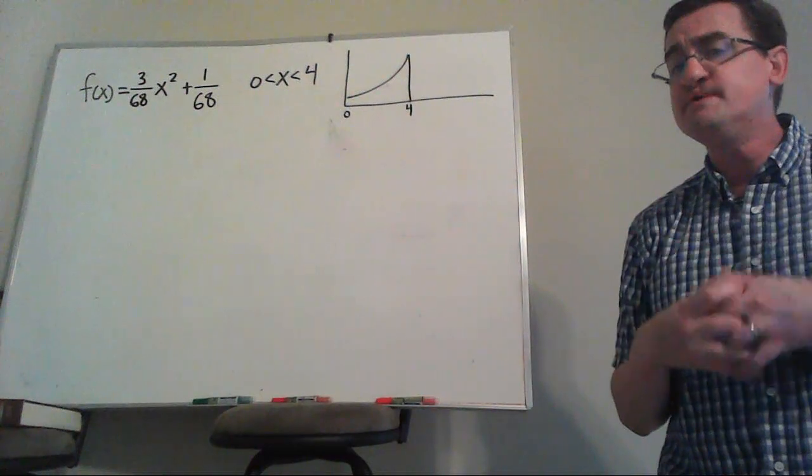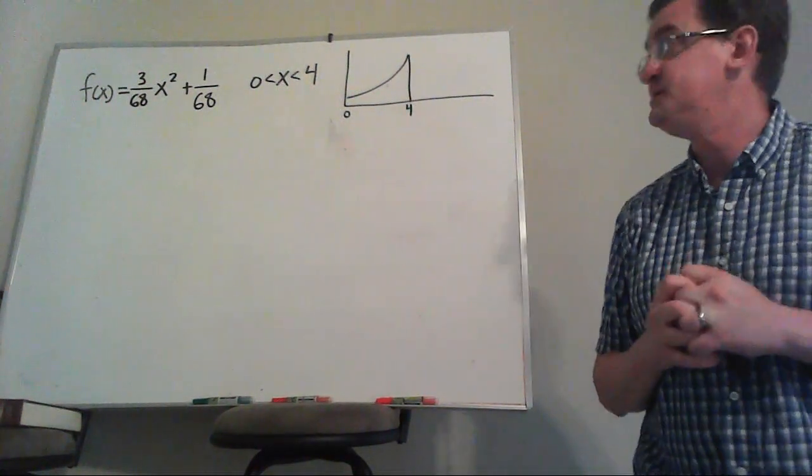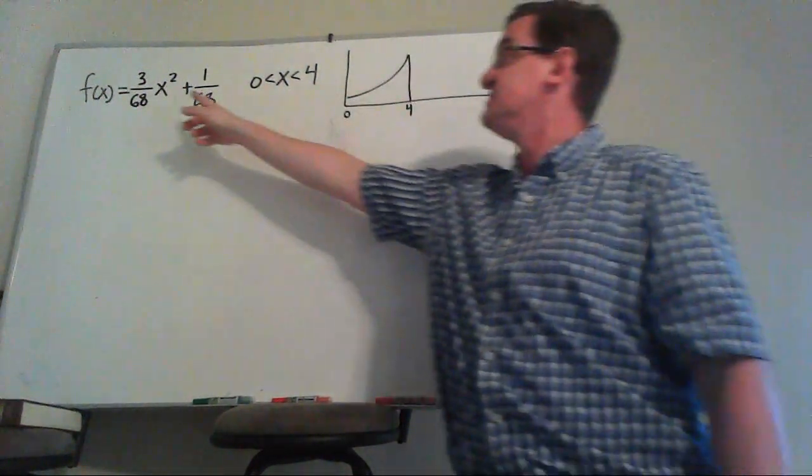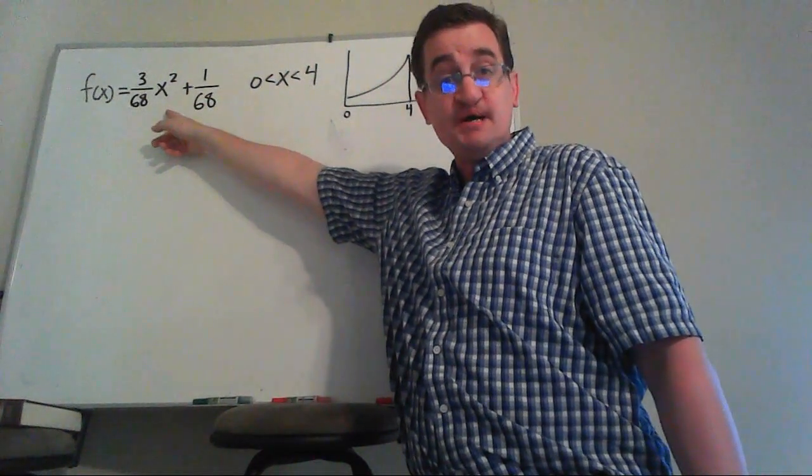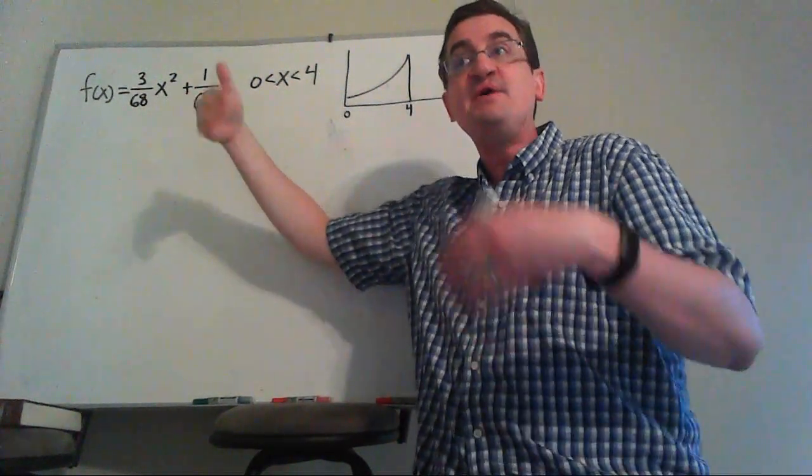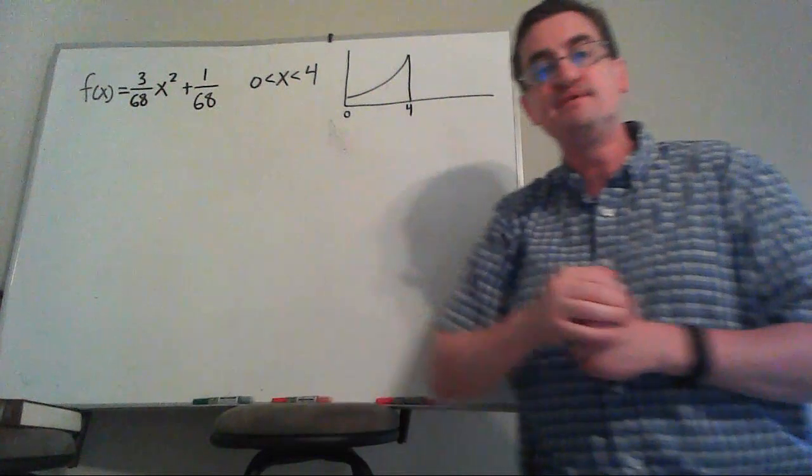I always want to worry about is this a true probability distribution? Is it always positive? Well at 0 it starts positive, and if I get higher values of x, they're all going to be positive. So that's fine.